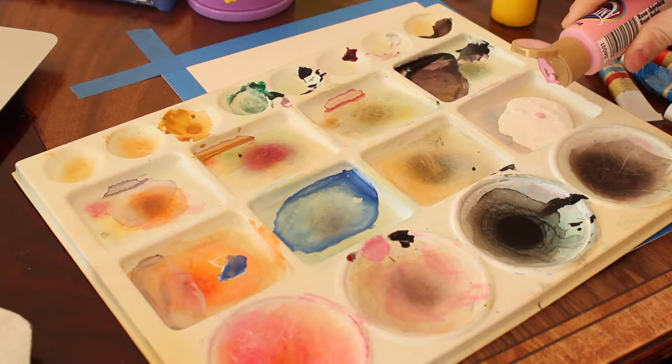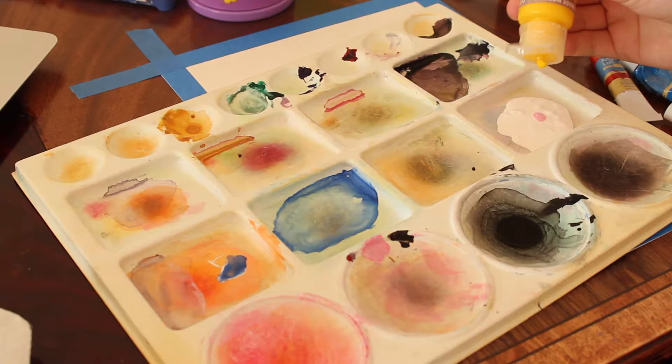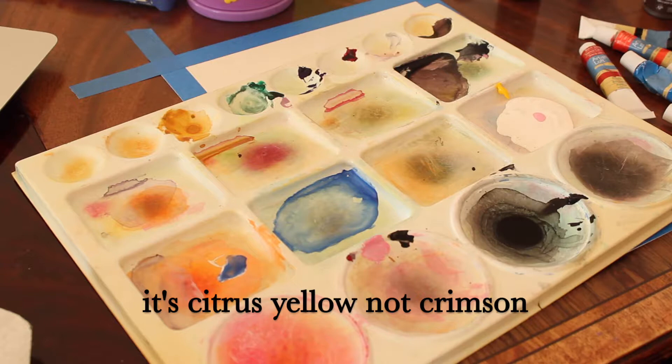We're using acrylic paints for this one. I started with a huge base of white paint, then added two little drops of pink and a lot of drops of crimson yellow.